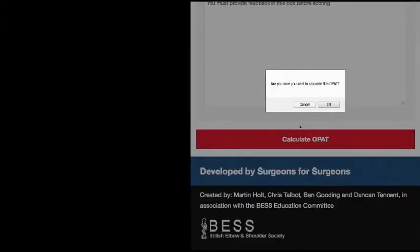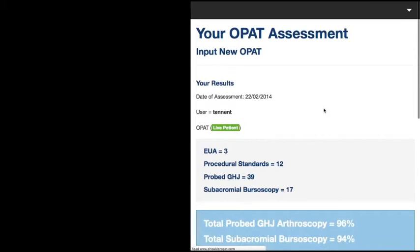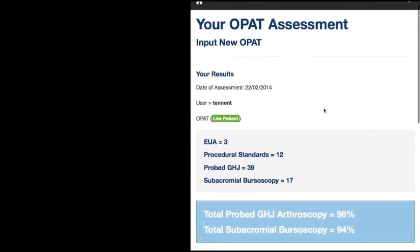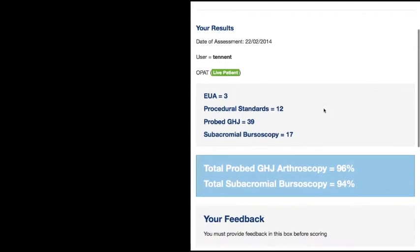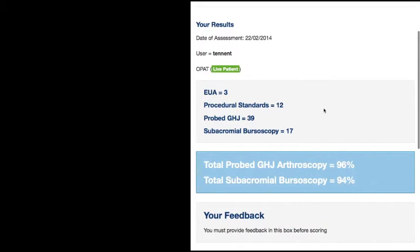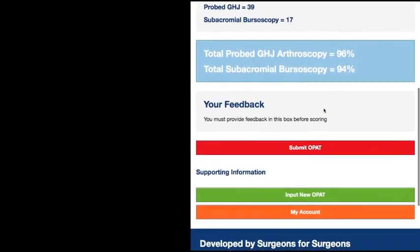The score is given as a percentage, taking into account the absence of any structures. A separate score is given for the glenohumeral joint and the subacromial bursa, recognizing that both may not be visualized at every arthroscopy. The score is also represented graphically to assist with the monitoring of progress. The score can then be submitted to the trainer electronically for later validation.